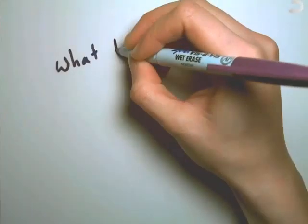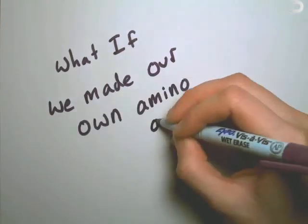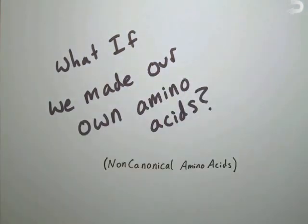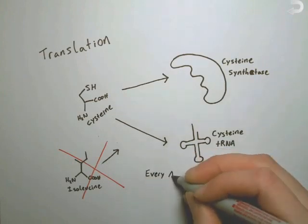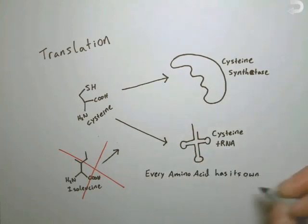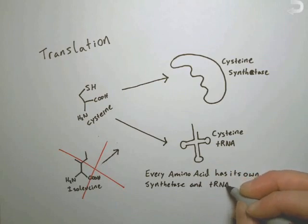So what if we made a protein with totally new building blocks, called non-canonical amino acids? It's tricky, because remember how each amino acid has a corresponding synthetase and tRNA? Well our new non-canonical amino acid wouldn't have those, so it literally could not be brought to the ribosome and added to the chain.